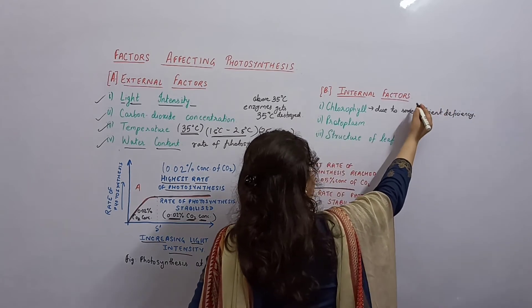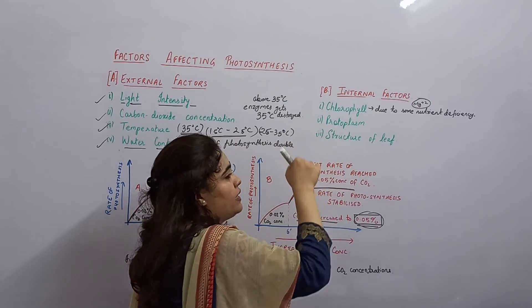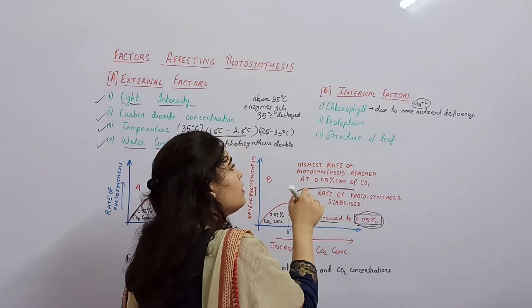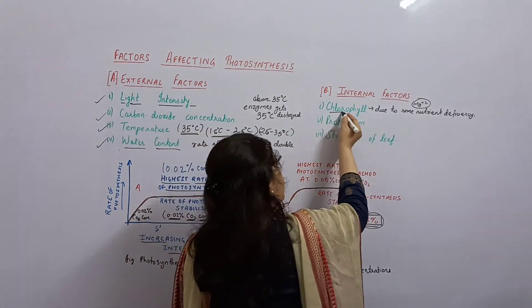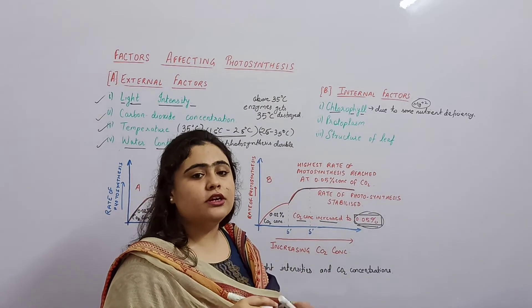If there is magnesium deficiency, magnesium is the core atom in chlorophyll. So if there is mineral deficiency, chlorophyll will decrease and photosynthesis will become less.